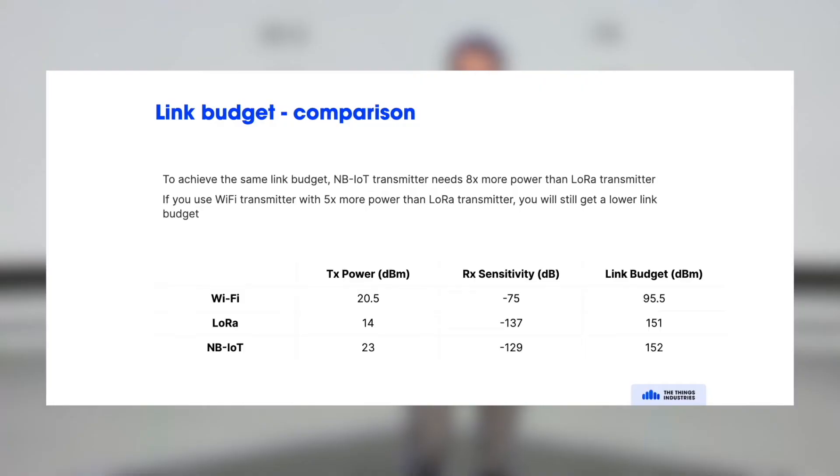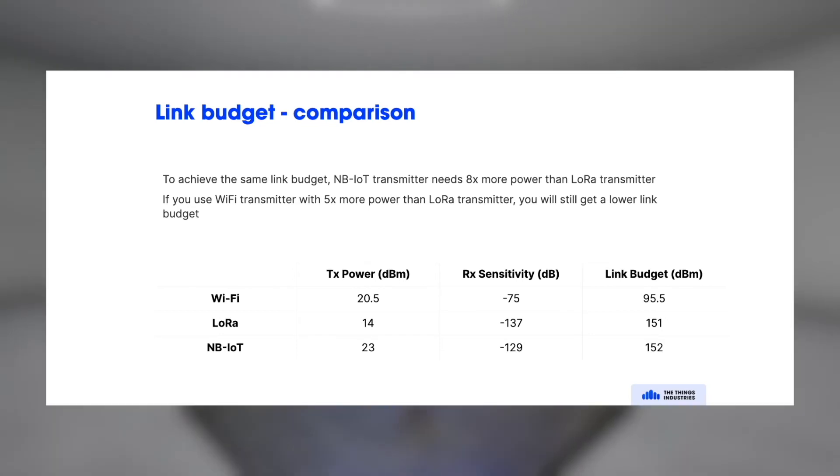So here you see a comparison with other wireless technologies. So in WiFi, for example, the transmit power is higher, so it draws more battery. The receiver sensitivity is also higher, and that means that your link budget is much smaller. It's 95 and a half.